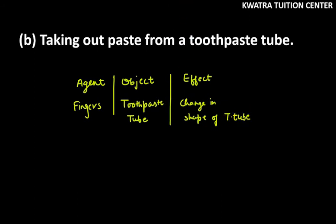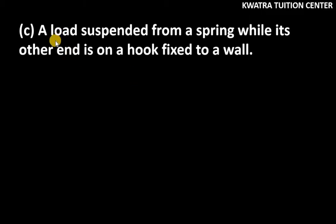Next, it says: A load suspended from a spring while its other end is on a hook fixed to a wall. So here, who is the agent? The load. The object? The spring. Third, what is the effect? Change in shape.